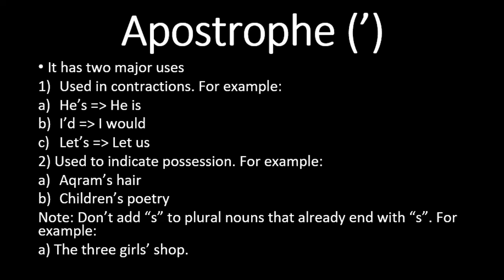Contraction is basically two words in English — you take two words, omit some letters, and combine them to make a short form. For example, 'he is' becomes 'he's' — an apostrophe replaces the omitted letters.